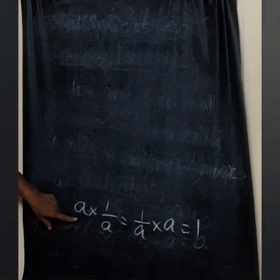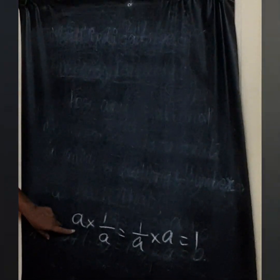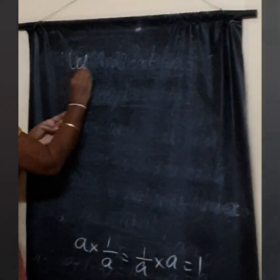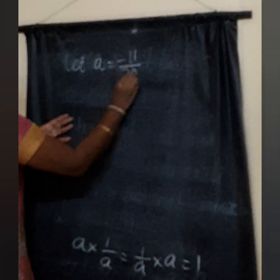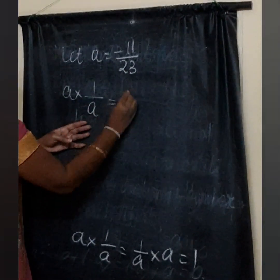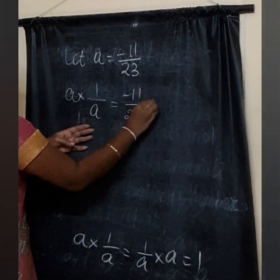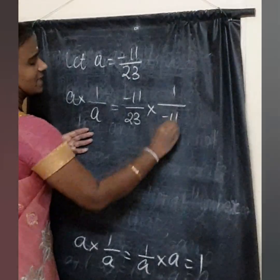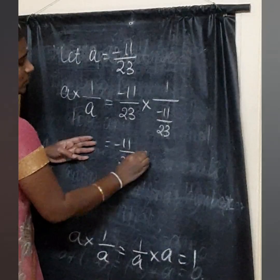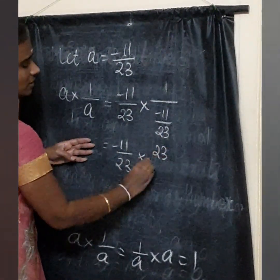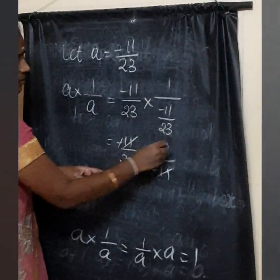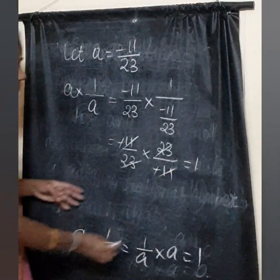Let's take A equal to minus 11 by 23. A into 1 by A is minus 11 by 23 into 1 by minus 11 by 23. The 23 goes to the numerator, and the minus signs cancel, 11 and 11 cancel, 23 and 23 cancel. The answer is 1.